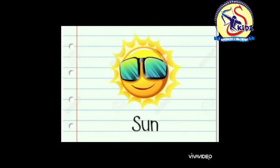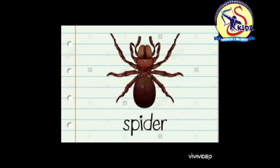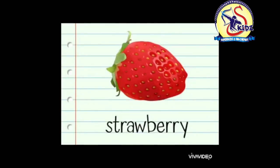See the next picture, this is a sun — sun, repeat: sun. This is a sun. Next picture is of a sandwich — sandwich, repeat: sandwich. Next picture is of a spider — spider, repeat: spider. It is a spider.